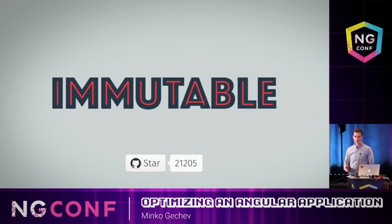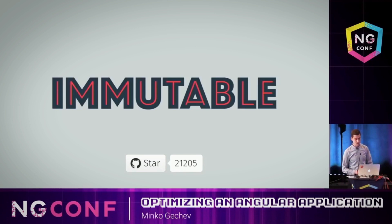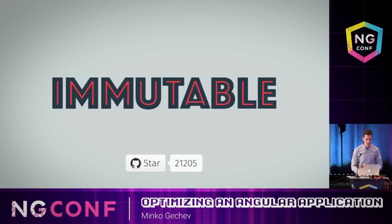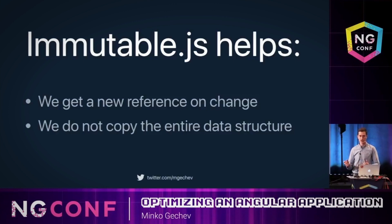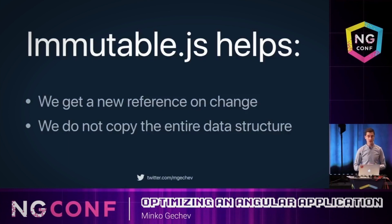We can use immutable.js for this purpose. This is a technology by Facebook which implements a lot of immutable data structures in a smarter way. Internally, they are using persistent data structures with partial persistence, and this has two important characteristics. First, we're going to get a new reference every time when we intend to apply a mutation on top of a given instance of a data structure. So if we add a new item to our immutable list, we get a new list while the initial list remains unchanged. And we don't need to copy the entire data structure, because internally immutable.js is reusing everything it can from the original list.